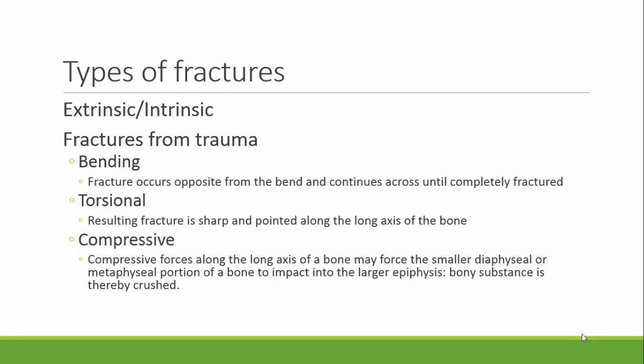Torsional fractures occur when twisting forces are applied along the long axis of the bone. Usually this is the result of one end of the bone being placed in a fixed position while the other end is forced to rotate. The resulting fracture is very nasty, and it leaves a long spiral with sharp points and often sharp edges.